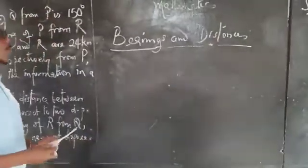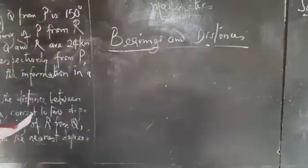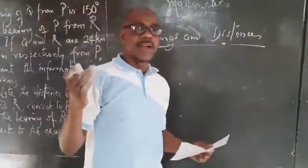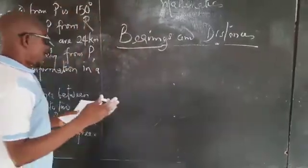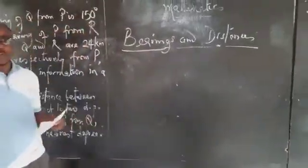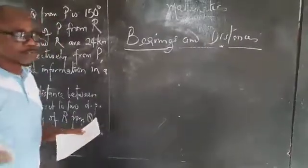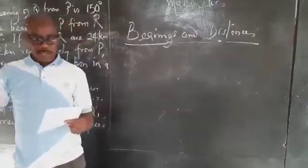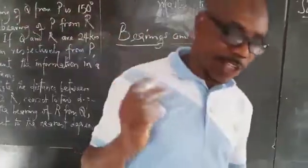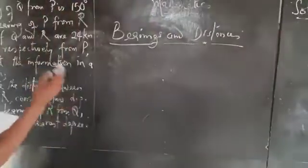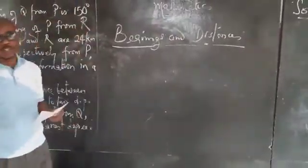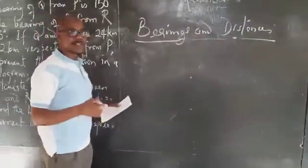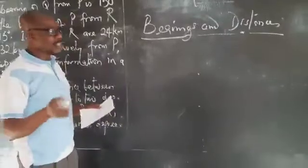The first thing we have to know is that angles can be given in two ways: three-digit notation or cardinal notation. What is cardinal notation? It has to do with north, south, east, and west.